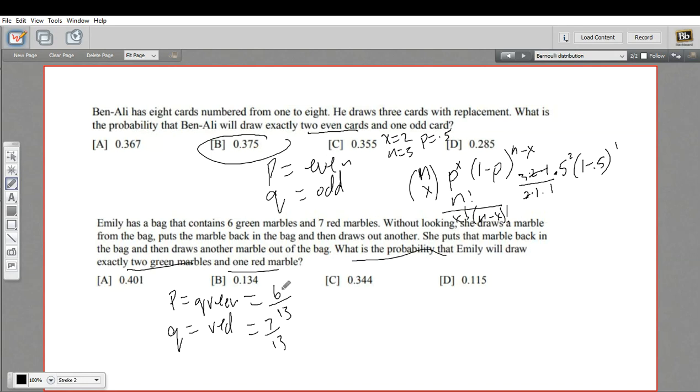Our number of trials and successes is the same as the previous problem. We want 2 green marbles, so our success number is 2, and total trials is 3. We have everything we need now. Let's set up the formula: n choose x times the probability of success raised to the number of successes, times 1 minus the probability of success, which is the probability of failure, to the n minus x power.